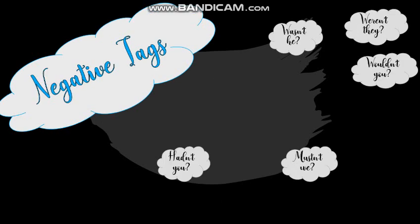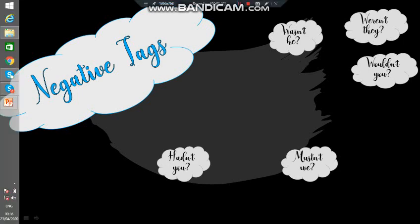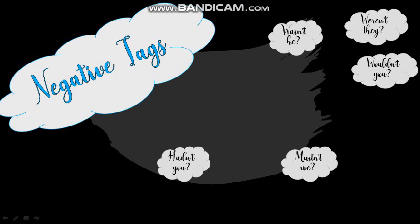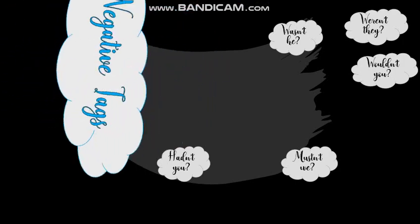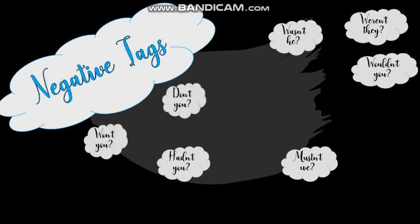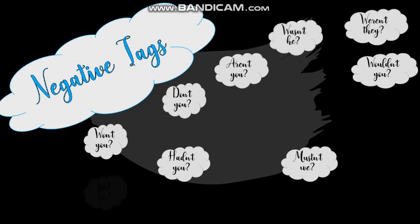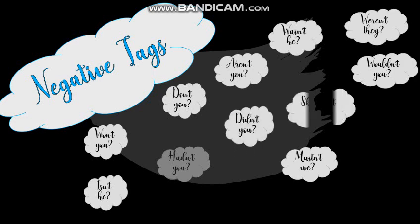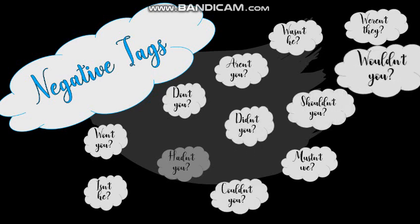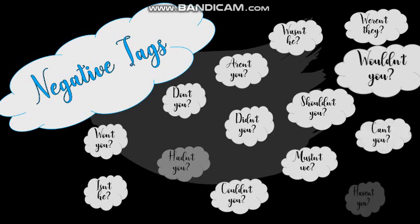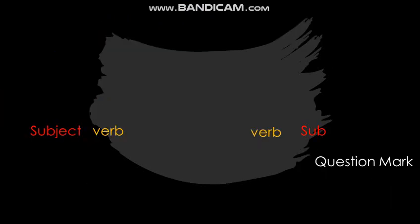For negative question tags, the auxiliaries carry the word 'not' in contracted form. Examples include: hadn't you, mustn't he, wasn't he, wouldn't you, weren't they, won't you, don't you, aren't you, isn't he, didn't you, shouldn't you, couldn't you, can't you, and haven't you.